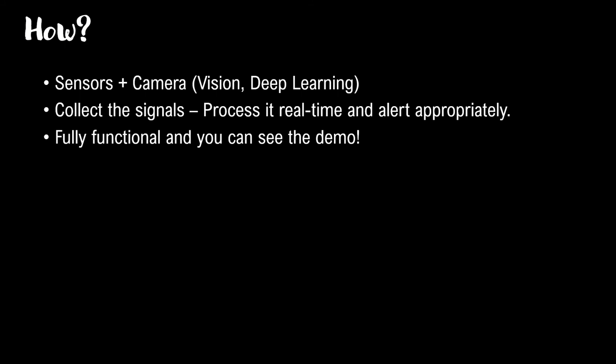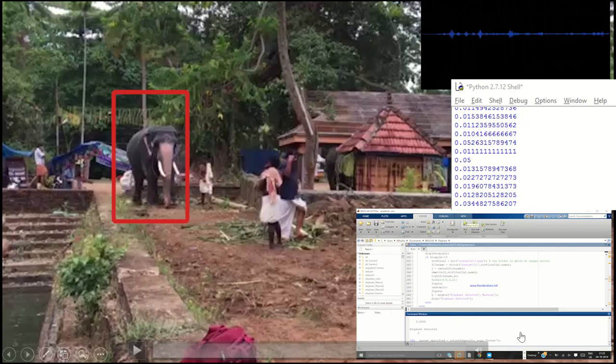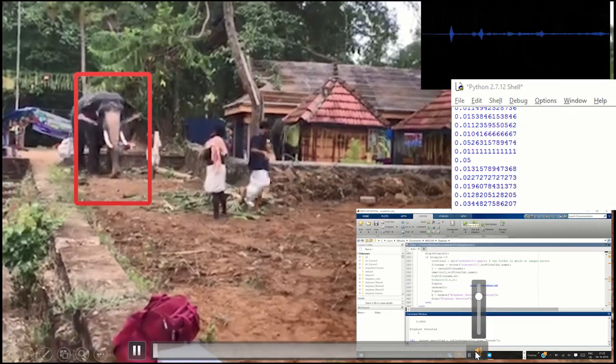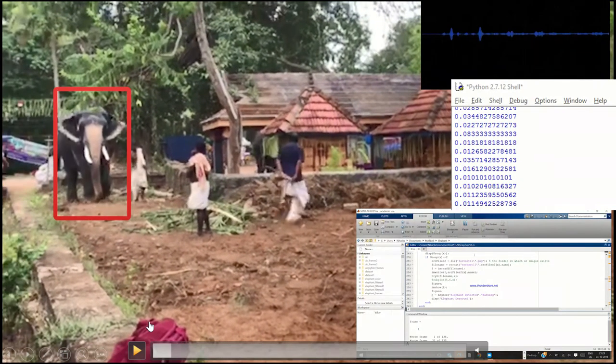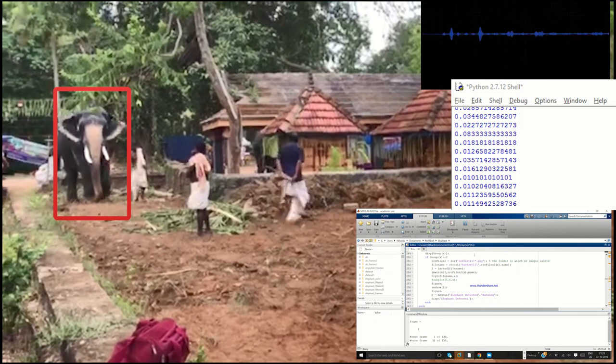We are going to use seismic sensors that capture the vibration pattern from the elephant. Whenever the elephant walks, I get the vibration — the seismic sensors get activated and give you data. The camera is going to provide a real-time feed, and we are going to use our intelligent deep learning algorithm which can predict and identify if an elephant is coming based on training. We are processing it in real-time and I'm going to show you a demo captured in Kerala. Our system detects the elephant from the video feed with a bounding box.